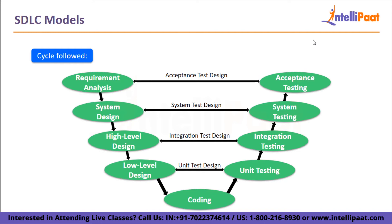Then we have high-level design, which specifies the architecture and design of modules and how two modules work together. Then low-level design, which describes individual component architecture and design. Lastly in this phase, we have coding, where code development is completed. In the validation phase, firstly we have unit testing — carried out using test cases created during the low-level design phase and done in-house by the developer on individual components. Then integration testing, carried out during the high-level design phase on integrated modules.